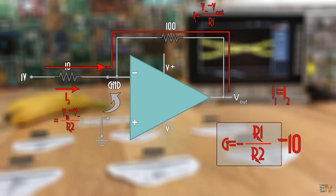That's why it is called inverted, since the output is inverted to the input and just by changing the resistor values, we can change the gain of the amplifier.